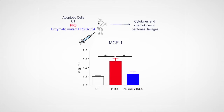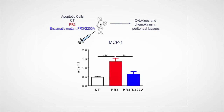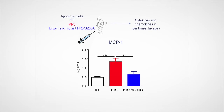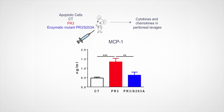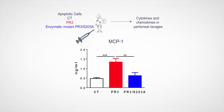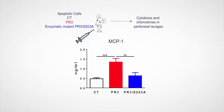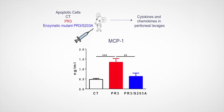We were able to demonstrate the pro-inflammatory effects of PR3 in vivo. Intraperitoneal injection of apoptotic cells expressing PR3 led to the secretion of pro-inflammatory cytokines and chemokines, and using an enzymatically inactive form of PR3, we were able to show that the serine protease activity of this protein was absolutely necessary in driving inflammation.